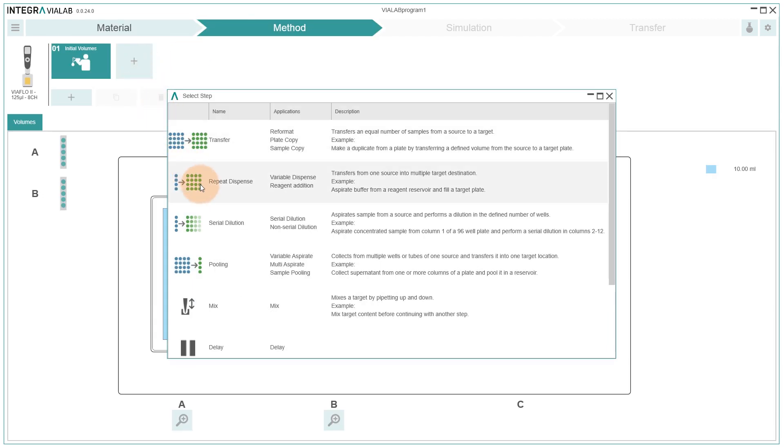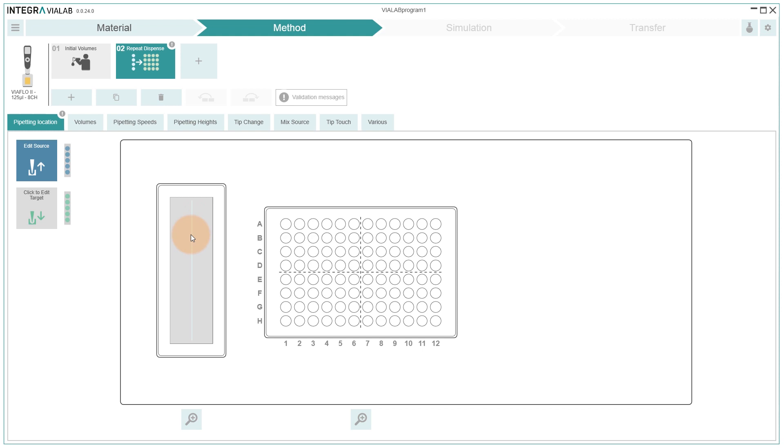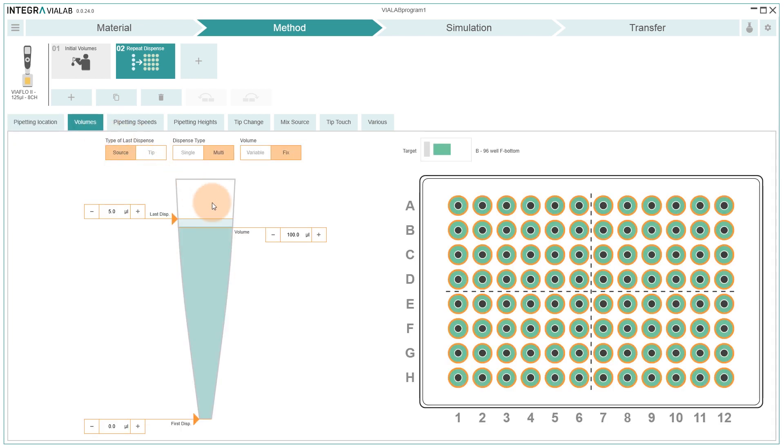Choose your pipetting task and define the basic parameters such as source and target. All that's left is to select the required volumes and you're ready to go.